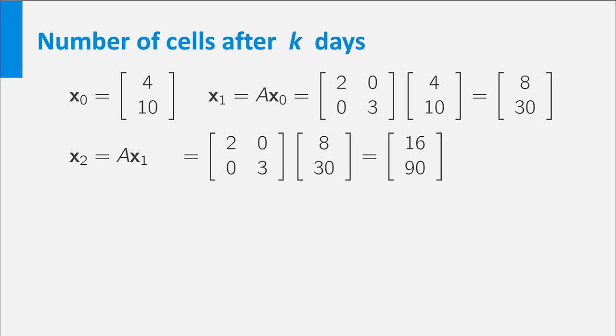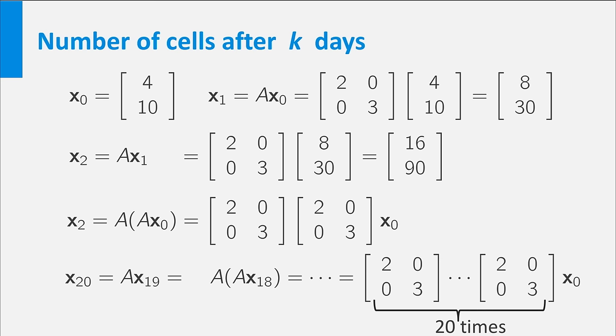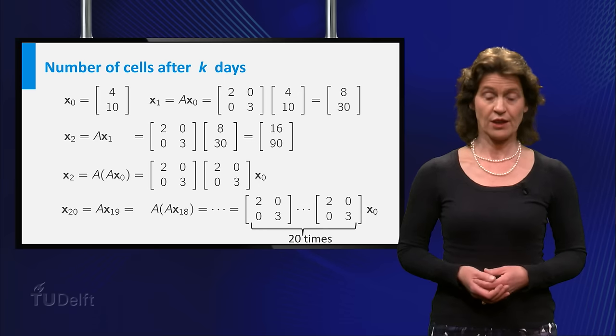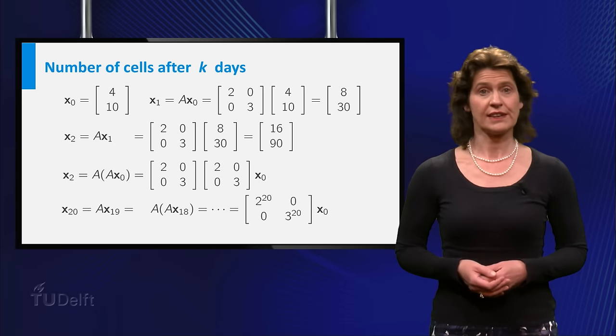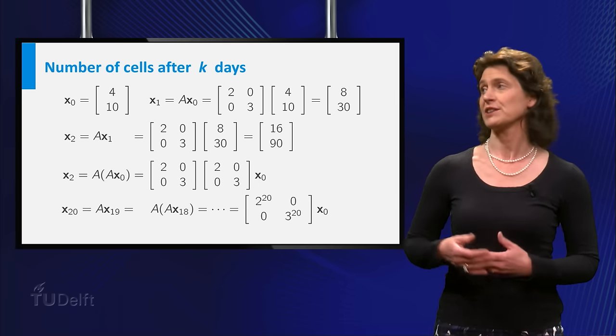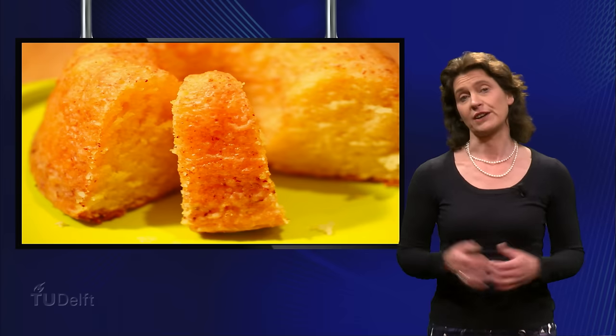After 2 days it is A times x1. This you can also compute like A times A times x0. And after 20 days, then it is equal to A times x19, which is equal to A times A times x18, etc. Until you multiply A 20 times with itself and apply it to x0. You can check for yourself that it is equal to this simple expression. Piece of cake, right?